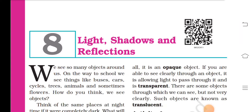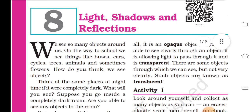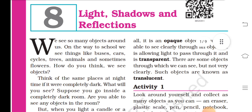We see so many objects around us on the way to school. We see things like buses, cars, cycles, trees, animals, and sometimes flowers.